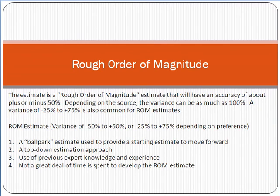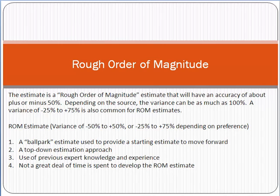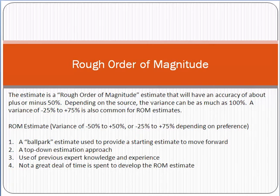The variance range can be minus fifty to plus fifty percent, or alternatively minus twenty-five to plus seventy-five percent. Just remember that Rough Order of Magnitude is not a very accurate way to estimate things; however, it gives the management enough of an idea to take a decision about the project. It is a ballpark estimate used to provide a starting point to move forward.